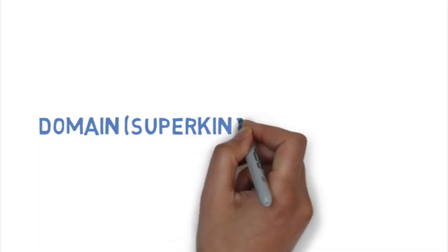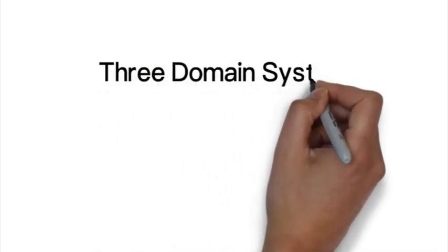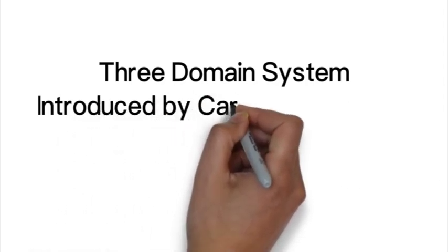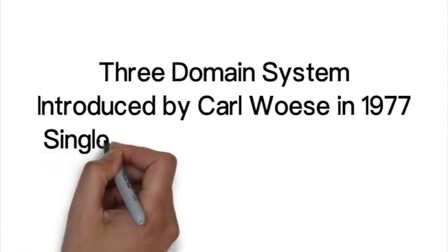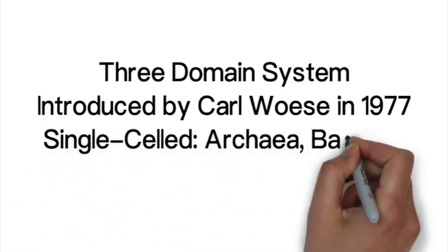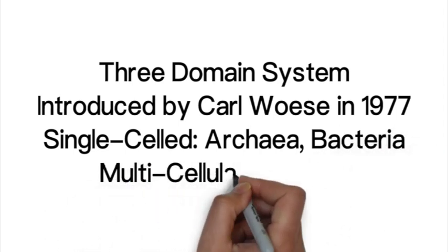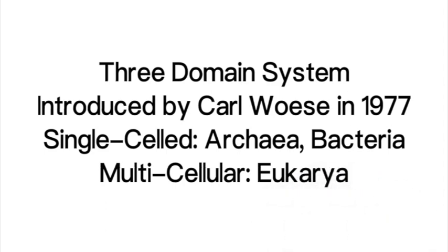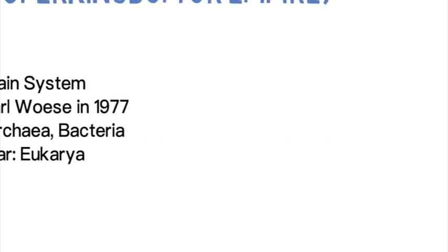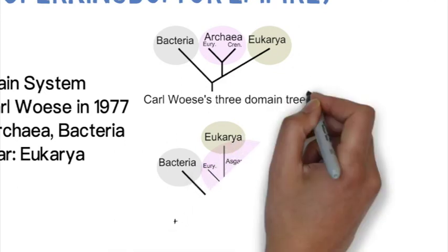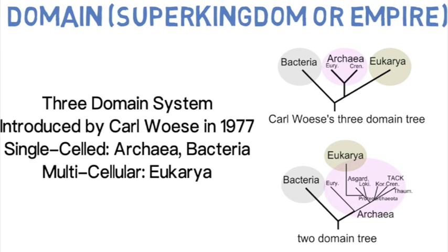Starting at the top of the pyramid is the domain, the highest taxonomic ranking — also called a super kingdom or empire. This is part of a three-domain system introduced by scientist Carl Woese in 1977, using phylogenetics and ribosomal subunits. He broke organisms down into three domains: bacteria, archaea, and eukarya. Bacteria and archaea are single-celled prokaryotes with no nucleus, while eukarya are multi-celled eukaryotes that have a nucleus and membrane-bound organelles.